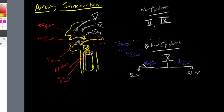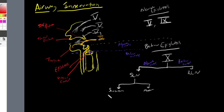Our superior laryngeal nerve, dealing with everything above the cords, is going to divide into two other branches. One branch is going to provide sensation — sensation to everything above the cords — and one is going to provide motor function. The sensation branch is called the internal branch of our superior laryngeal nerve. The motor branch is called the external branch of our superior laryngeal nerve.